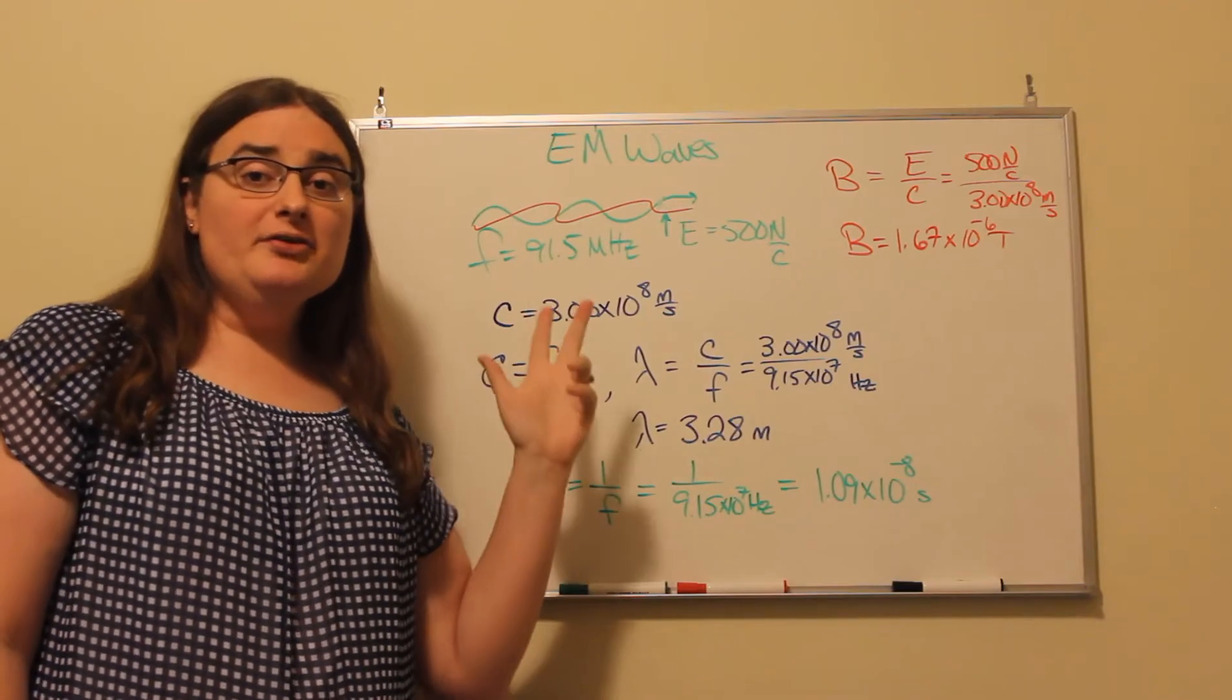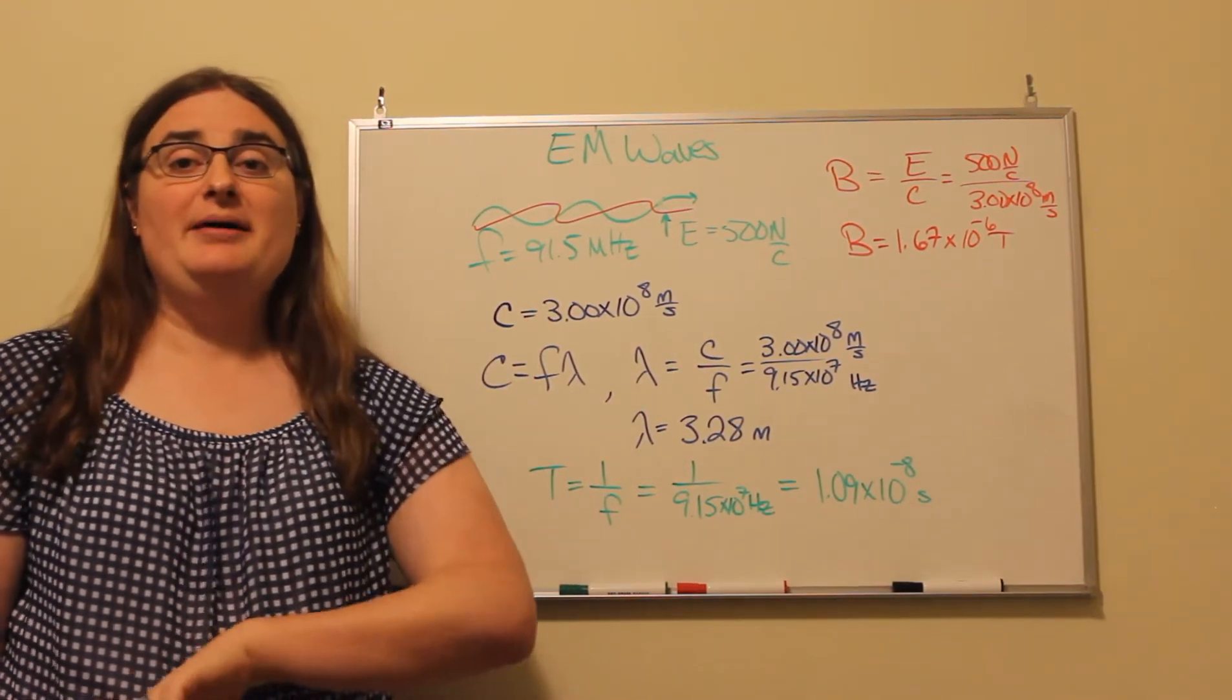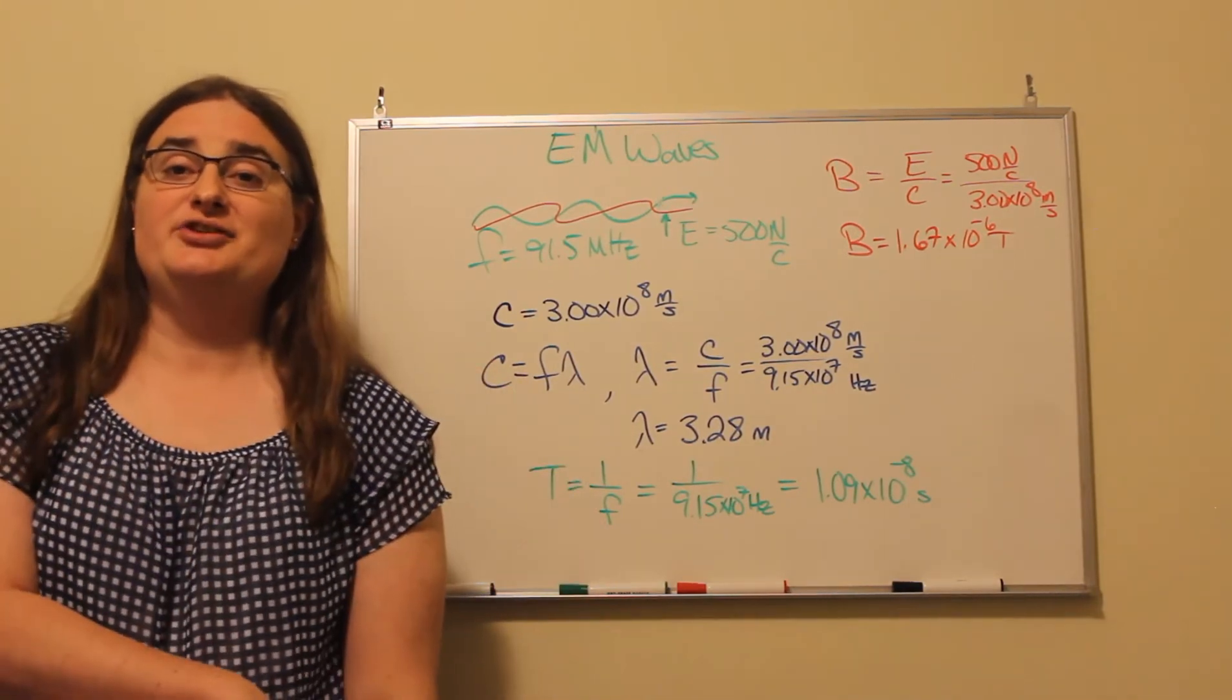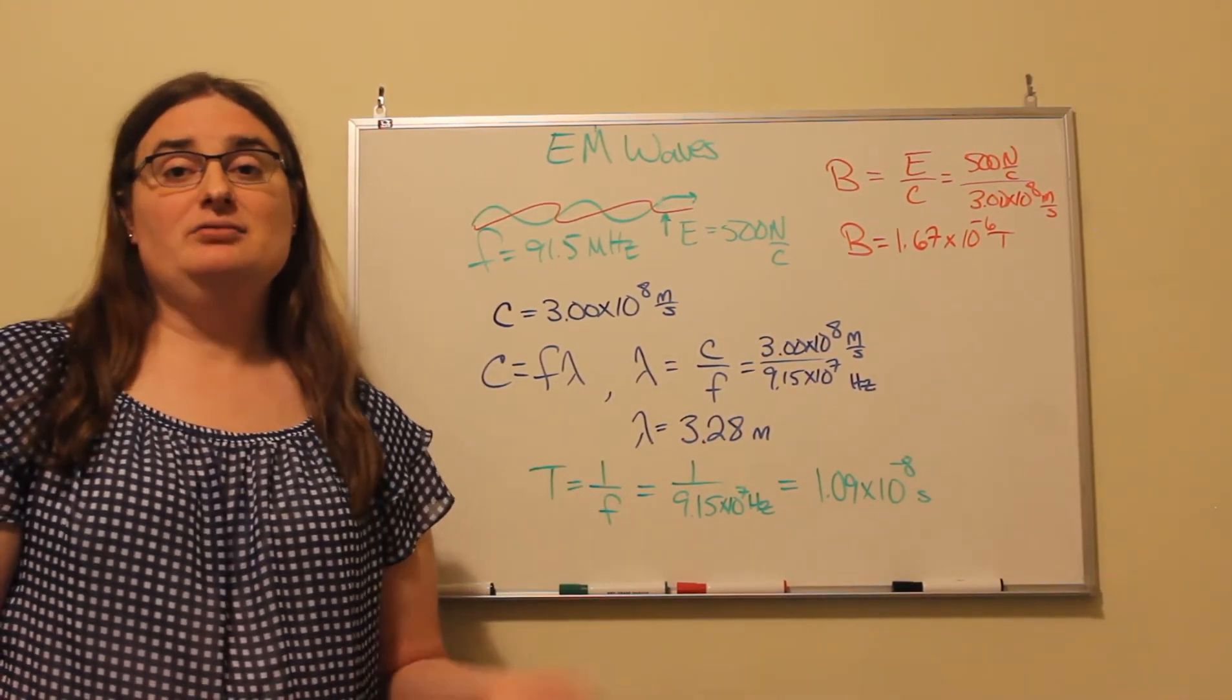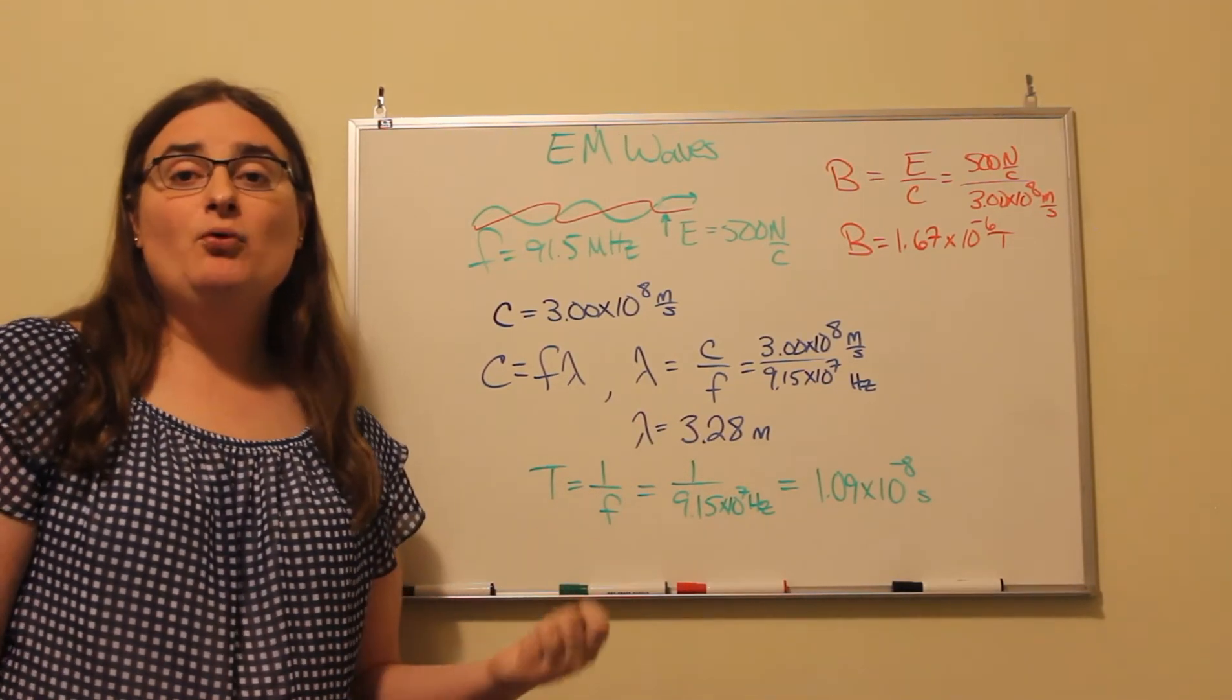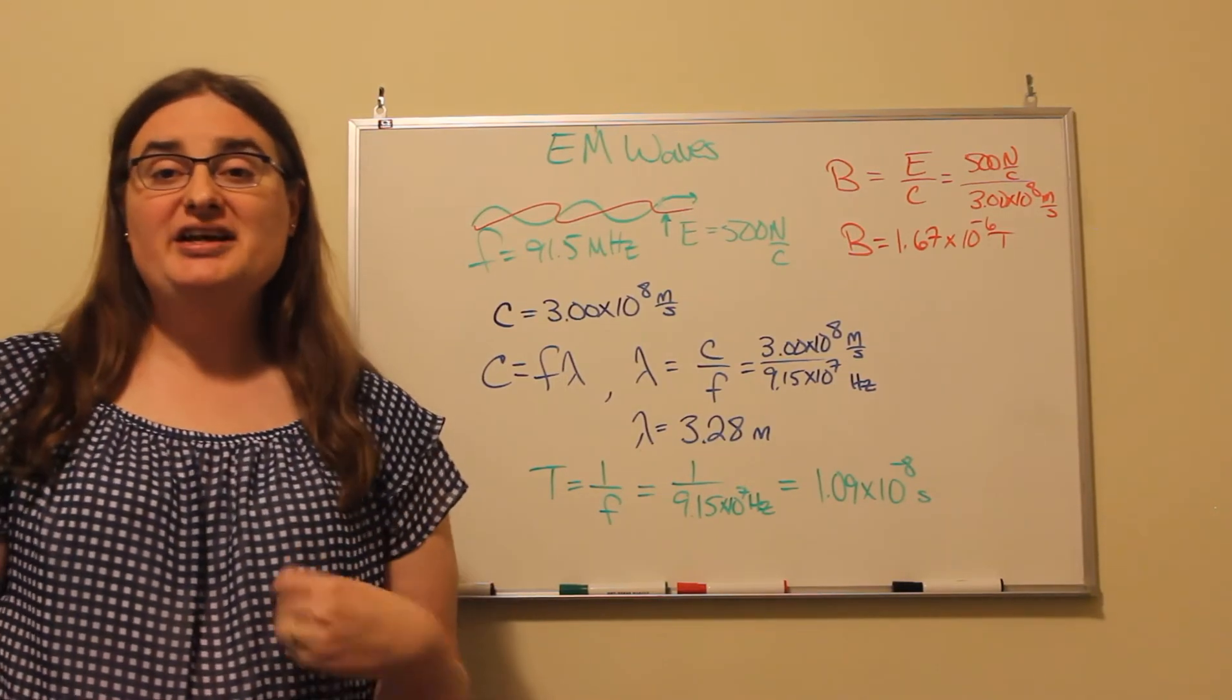Now the other piece we could look at is instead of thinking about frequency, we could think about period. Well period and frequency are exact inverses of each other. So the period would be 1 over 9.15 times 10 to the 7 cycles per second, which gives 1.09 times 10 to the negative 8 seconds per cycle, which is just about 11 nanoseconds.